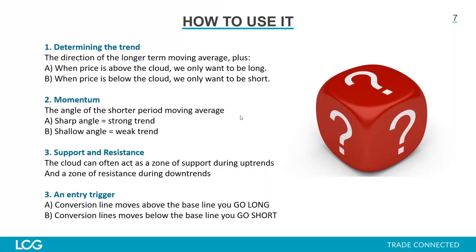Number one: determining the trend. This is absolutely key. A lot of the way this indicator is formed uses moving averages, and just like moving averages, this indicator is pretty much useless in a sideways trading environment. Luckily, it's quite easy to see just from the colors of the cloud — if they're constantly changing color, that's your visual cue that we're not in a trending environment and those signals should be ignored. But when you are in a trending environment, it's very good at telling you what that trend is and giving you a clear signal around the beginning of the trend.